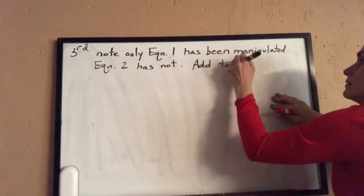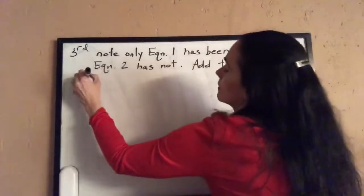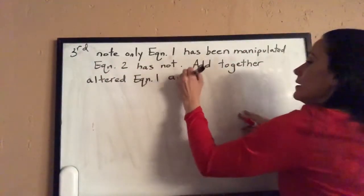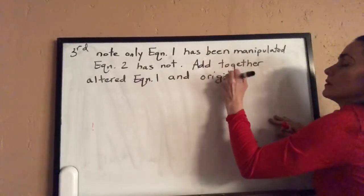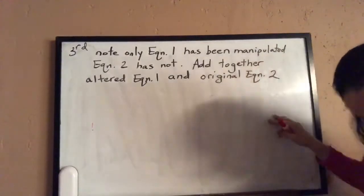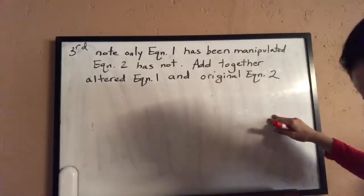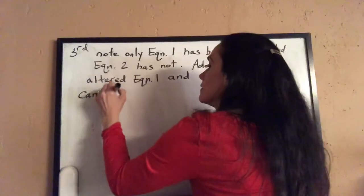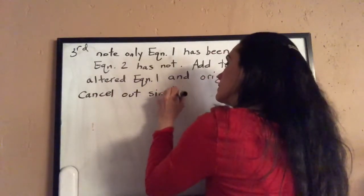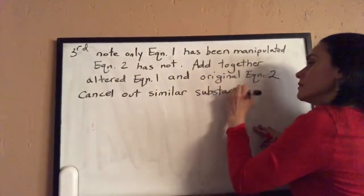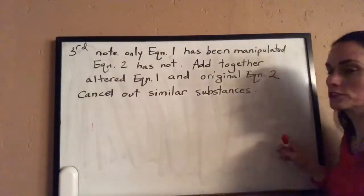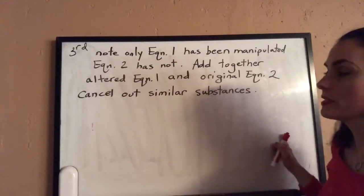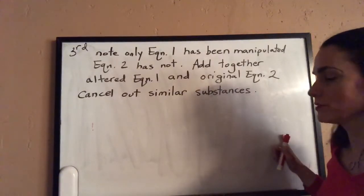We add together the altered equation one and original equation two, then cancel out terms that are the same on each side — just like solving a system of equations in algebra. We treat the reactants and products as if we had a system of algebraic equations.